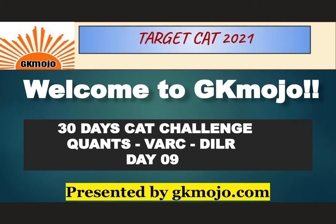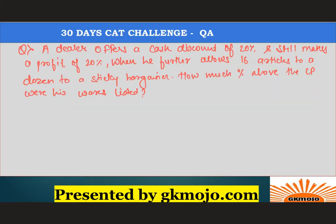Let's have a look at the first question. A dealer offers a cash discount of 20 percent and still makes a profit of 20 percent. When he further allows 16 articles to a dozen to a sticky bargainer, how much percentage above the cost price is the listed price?